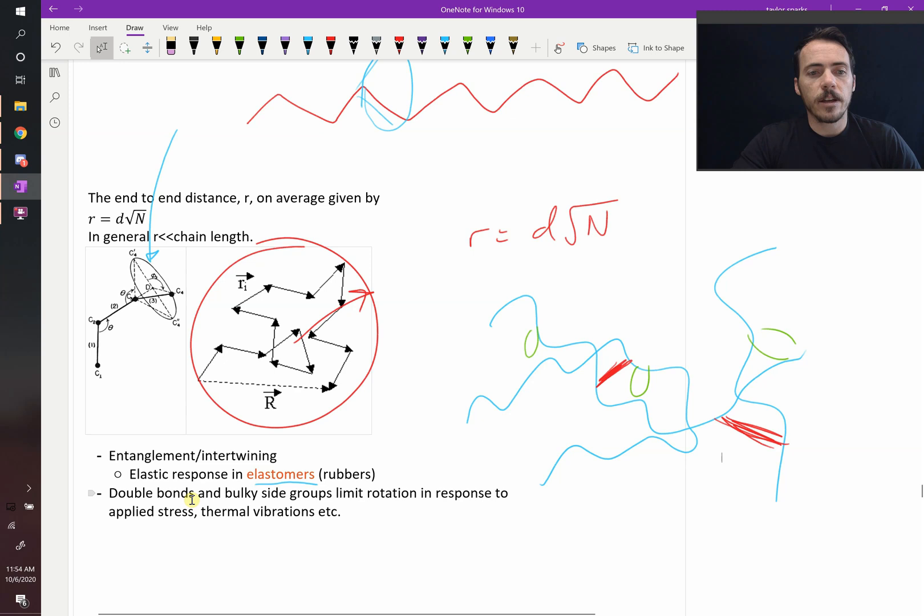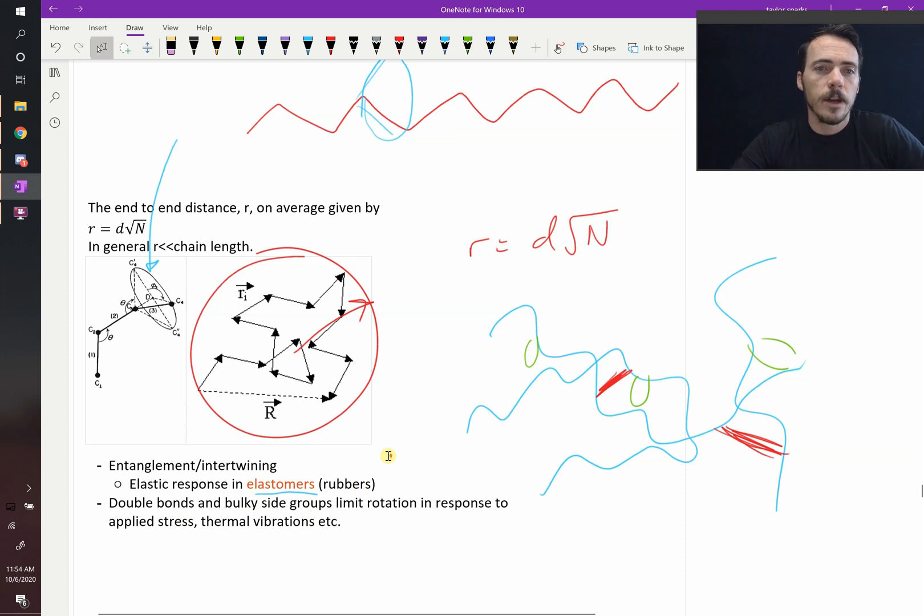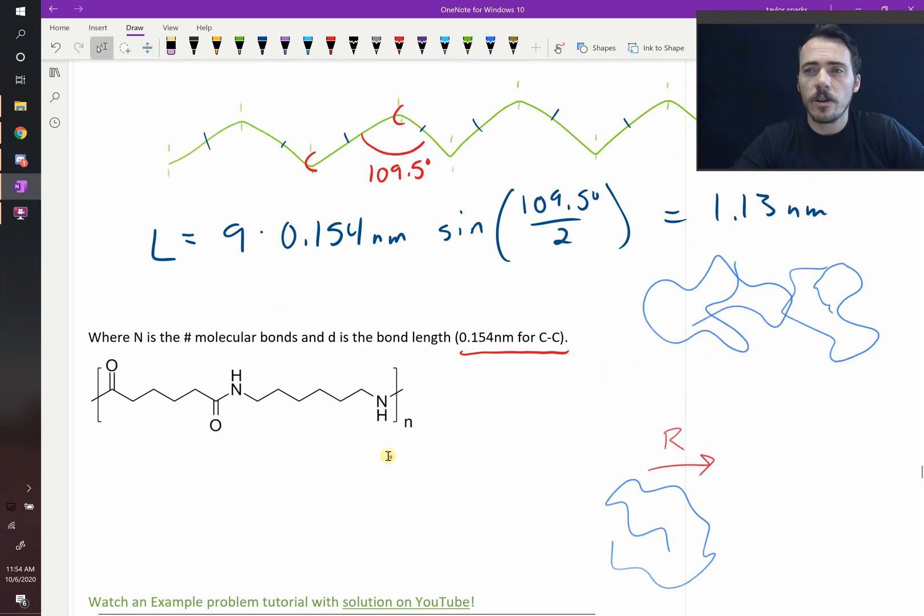So doing things like adding double bonds or big bulky side groups, that will limit your ability to rotate in response to an applied stress or thermal vibrations. They're not going to be as good as that. Anyways, so that's how you calculate length.